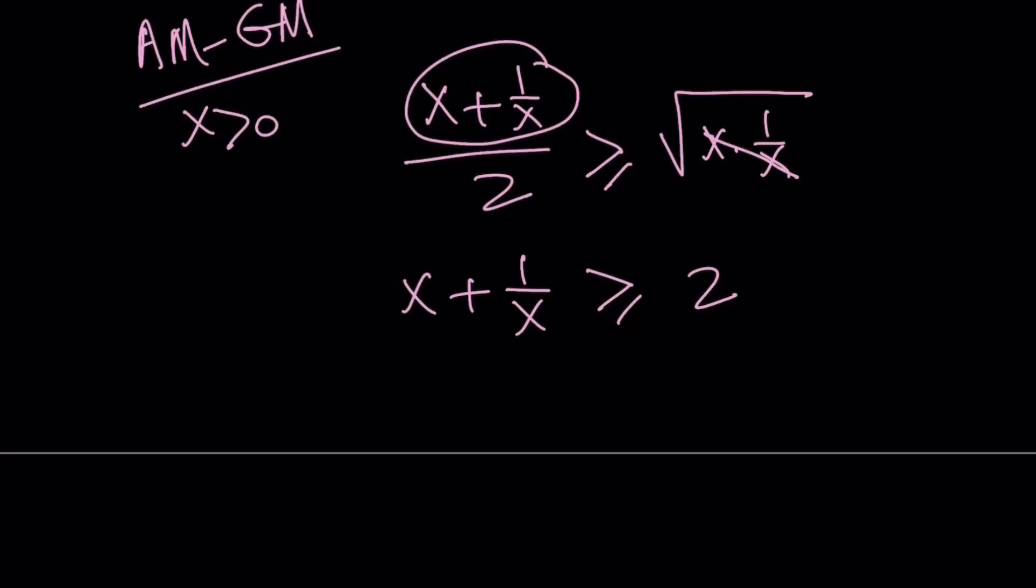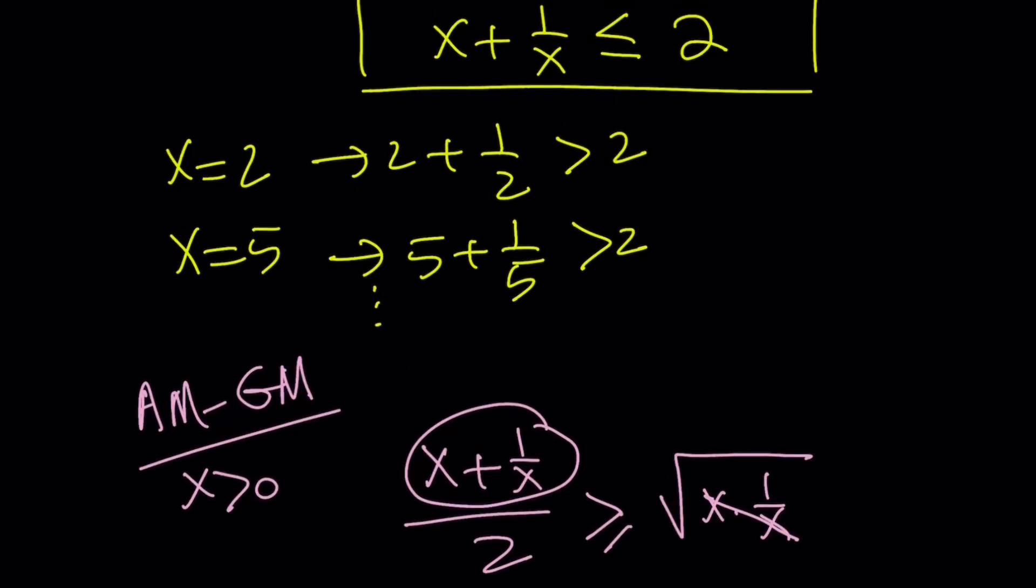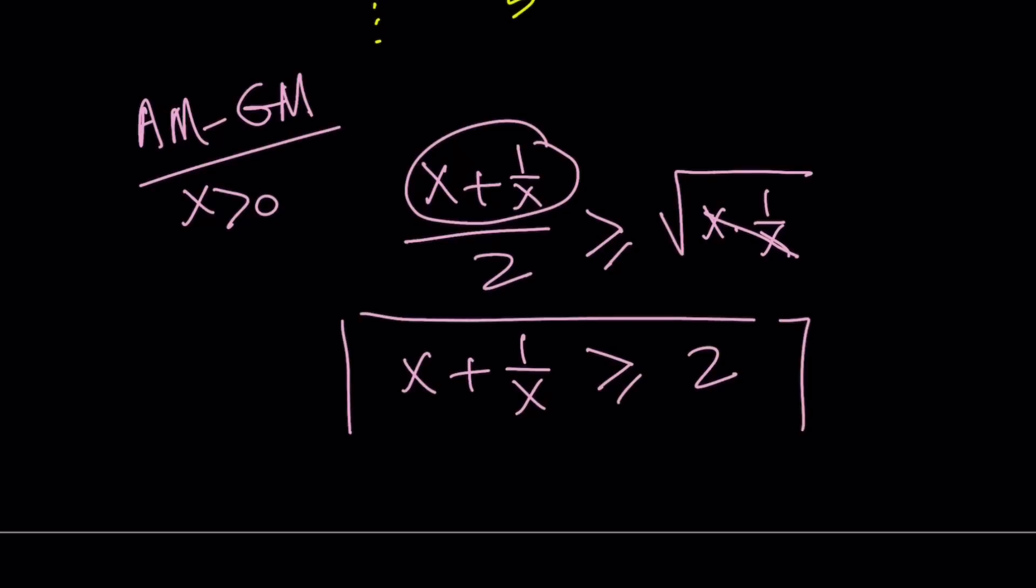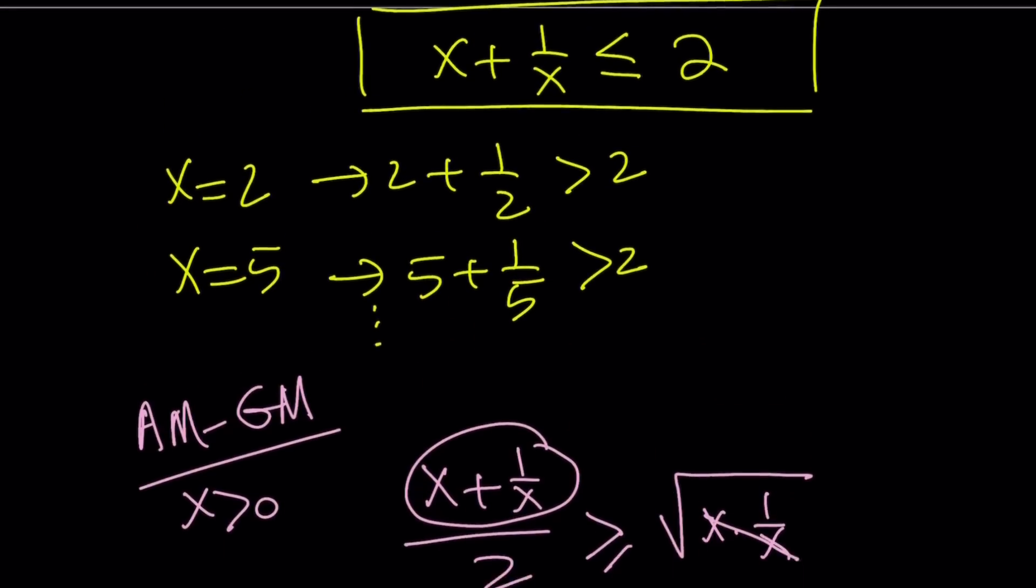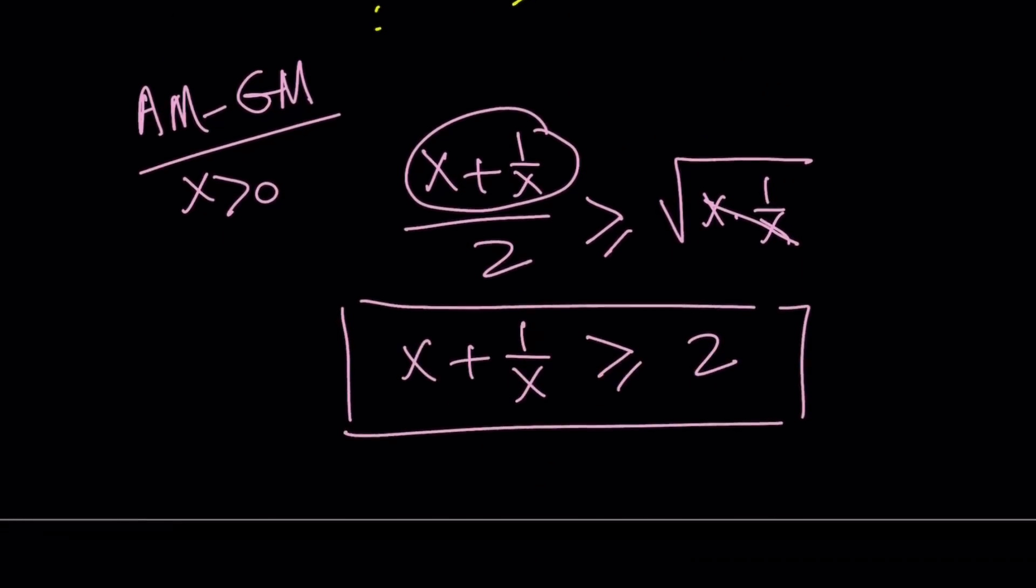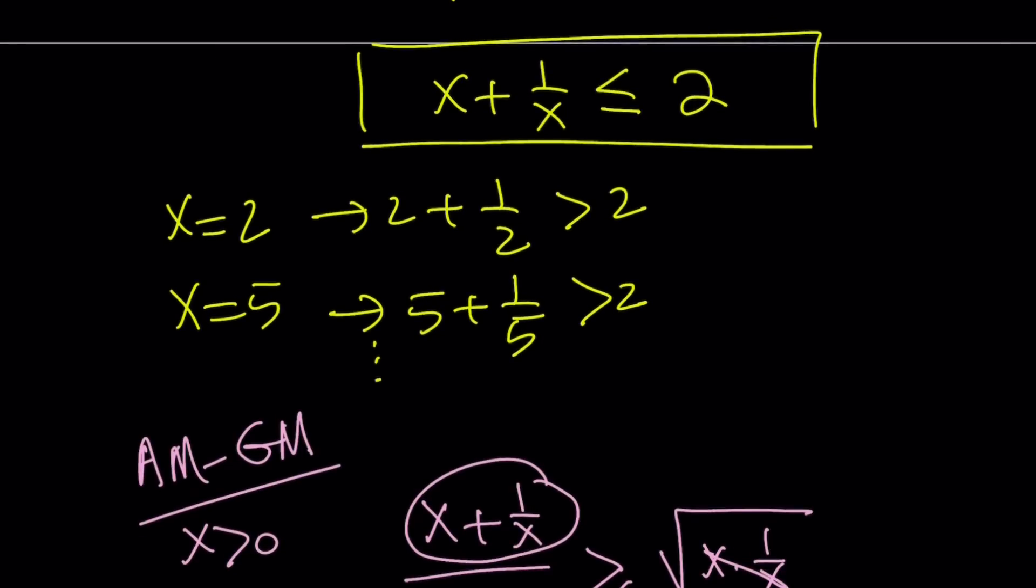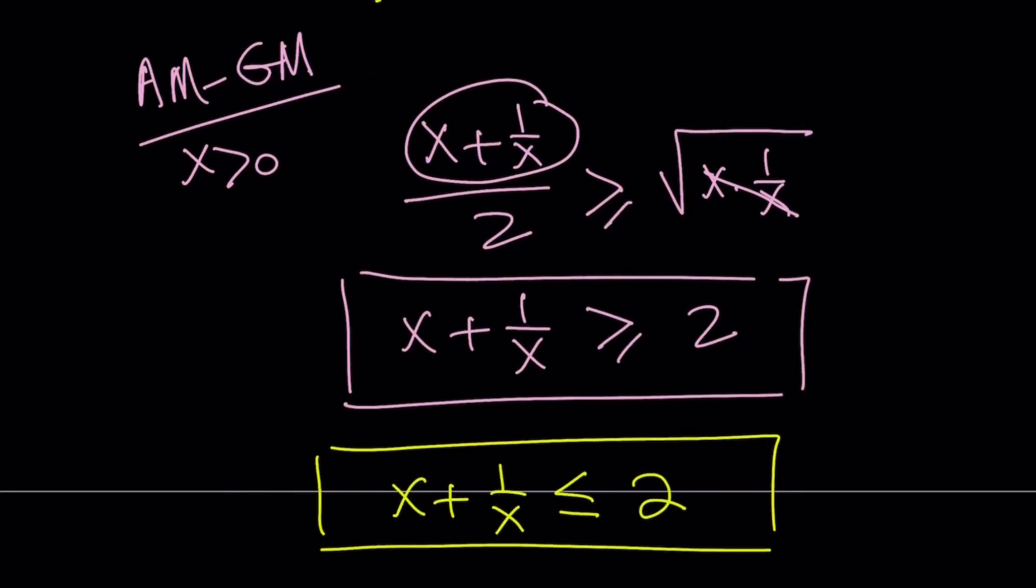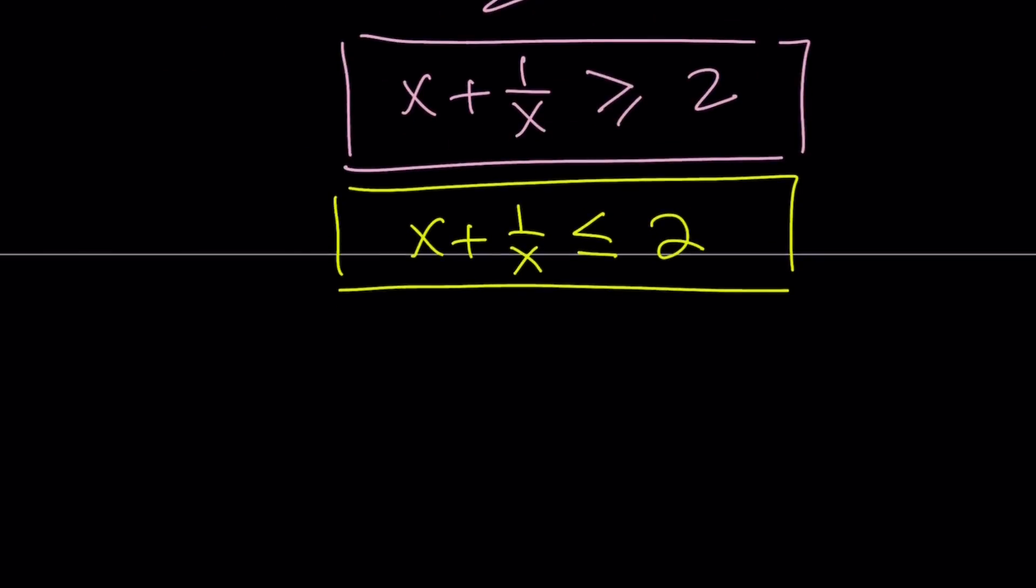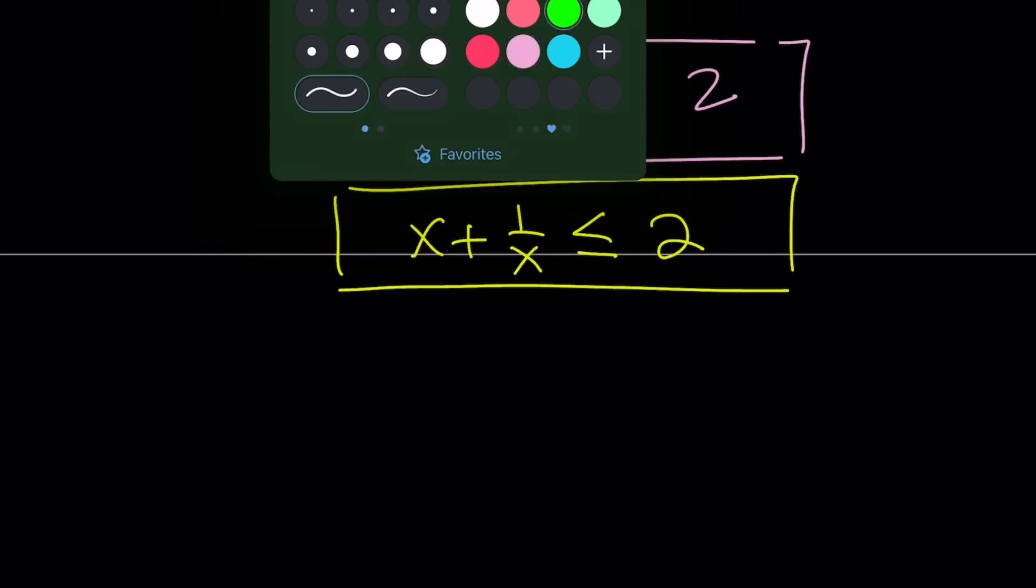So from here, we get the following: x plus 1 over x is greater than or equal to 2. So if x is positive, this is always true, as we noticed with different values. So what is that supposed to mean? You have two inequalities. Put it together. One inequality says x plus 1 over x is less than or equal to 2. The other inequality says x plus 1 over x is greater than or equal to 2. So if you put these two inequalities together, notice that these two don't contradict each other, but the only intersection point is x plus 1 over x equals 2.